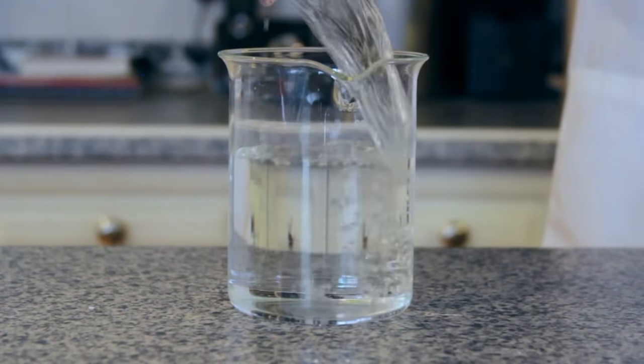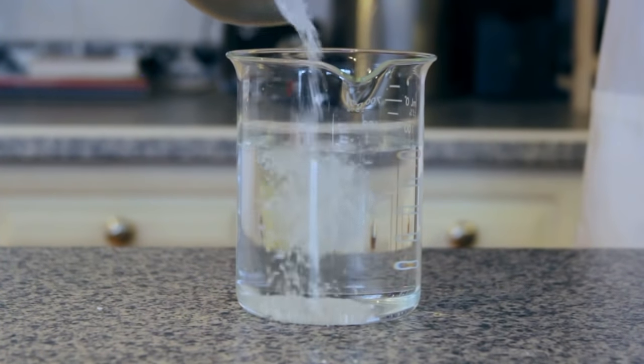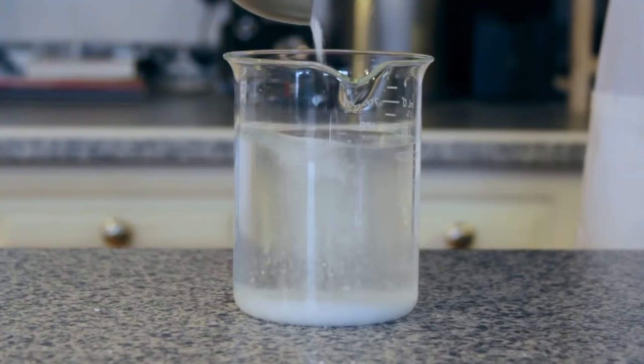We've measured out 540 grams of water. Once you've measured your water, pour it into your glass container. Next, measure and add your salt into the container. We've measured out 60 grams of salt.